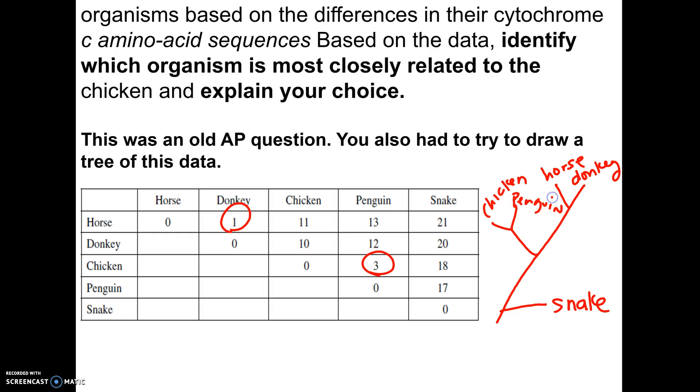Again, this is super sloppy. It doesn't look like a nice, pretty cladogram, but this was absolutely perfect for what they were looking for. It just had to sort of match up with the data and show that the chicken and the penguin were very closely related to each other. That was important. That the horse and the donkey were most closely related to each other. And that the snake should be somewhere far away because he was much less related to the others. So this is not on the quiz we're going to take, but I wanted to show it to you since it's something, if you saw a weird matrix like this on the AP exam, so you'd know what it meant.